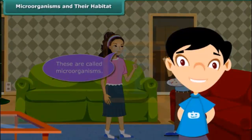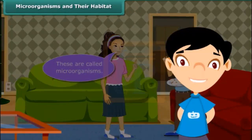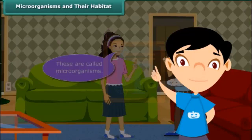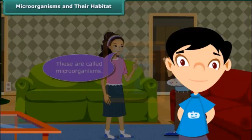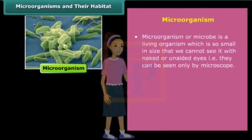Friends, you will be surprised to know that a microorganism can help us in making our food and the same can make us ill too. Before getting more information about them in detail, let us first know about such microorganisms and their habitat. A microorganism or microbe is so small in size that we cannot see it with naked or unaided eyes. They are broadly classified into four major groups: bacteria, fungi, protozoa, and algae.